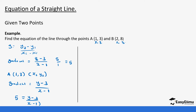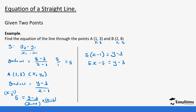We multiply both sides by (x minus 1) — always put the bracket to ensure a correct calculation. This cancels out the denominator, so it becomes 5 times (x minus 1) equals y minus 3. Opening the bracket gives 5x minus 5 equals y minus 3. We move like terms: 5x equals y minus 3 plus 5. So 5x equals y plus 2. It is important to have y on one side to form a linear equation.